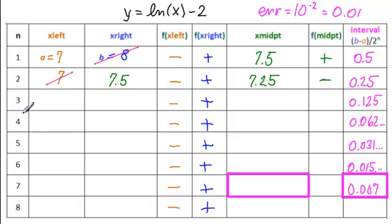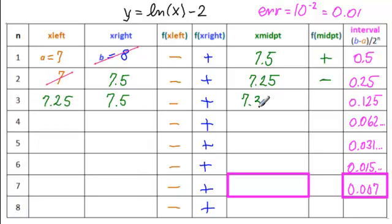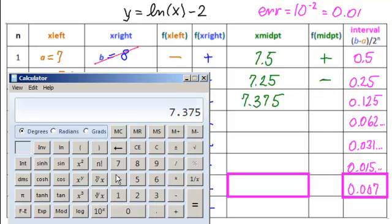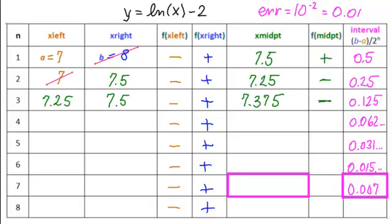So 7.25 comes here, 7.5 remains here. Now we're looking for the midpoint of those two. So 7.25 plus 7.5 equals, divided by 2 equals 7.375. We need to know the sign of the function value, so we take ln of that minus 2 equals. That's negative. So again, we're throwing away the left one because the left one here is negative.